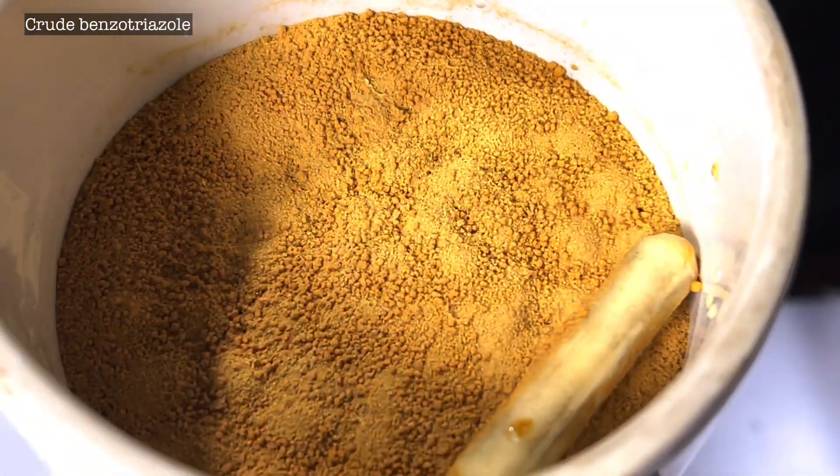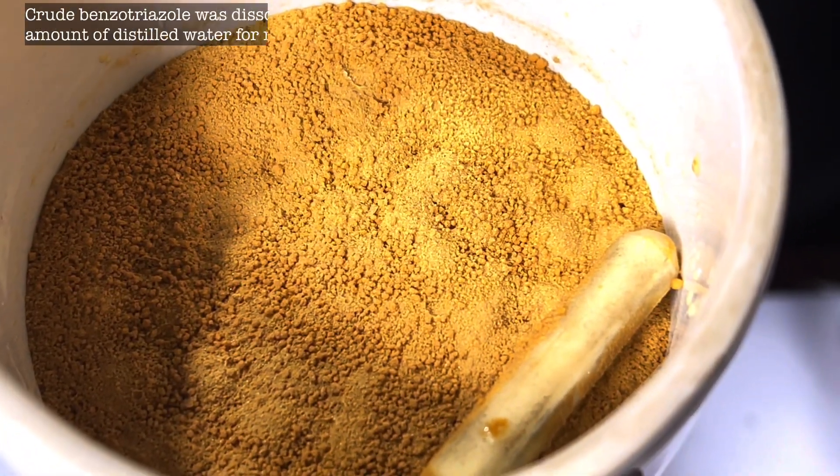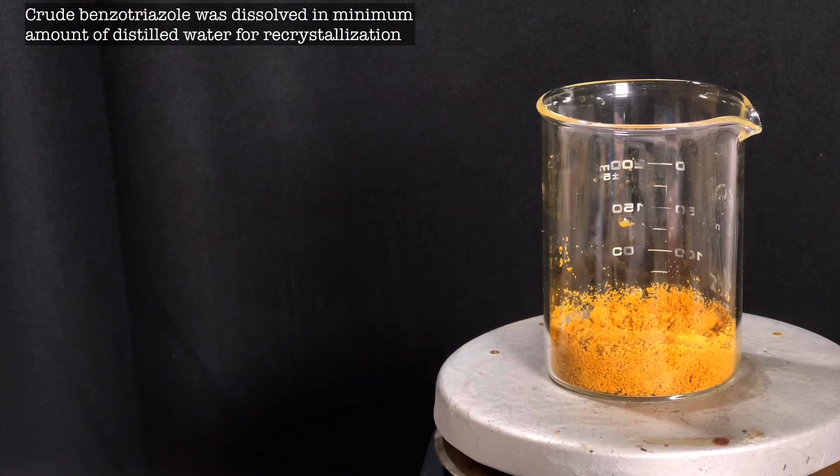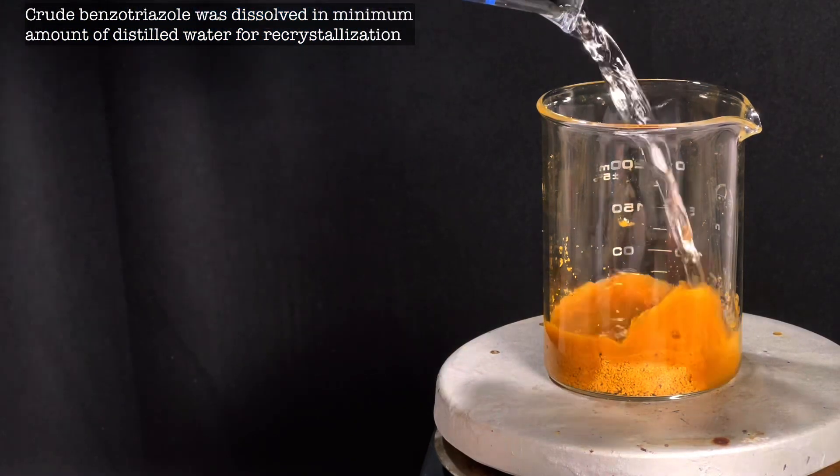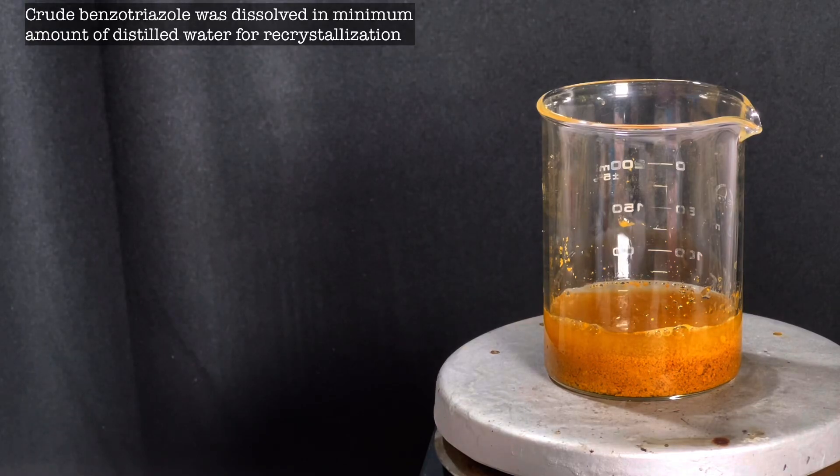Next we proceed to recrystallization and purification of the crude product. For that the crude product was transferred to a 250 milliliter beaker. Minimum amount of water was added and the mixture was heated.